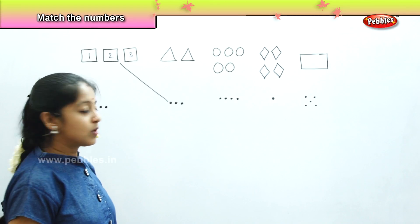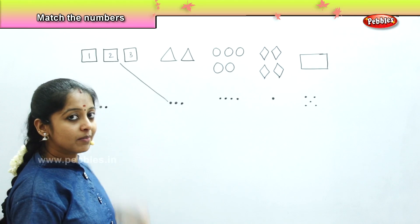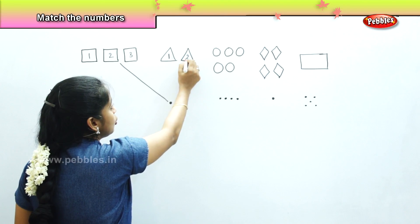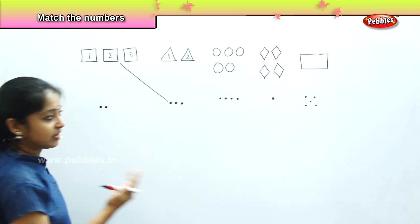Now, the next one, what is it? This is a triangle. Can we count the number of triangles? It is 1 and 2. We have only 2 triangles. And where can we find the 2 dots?